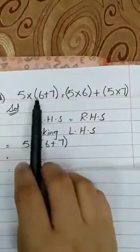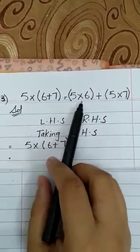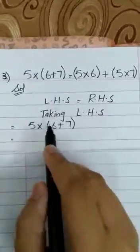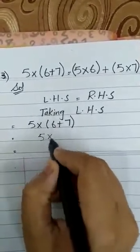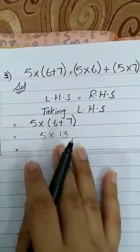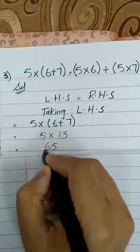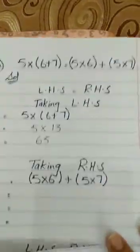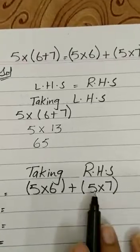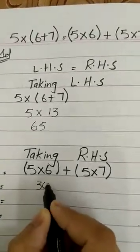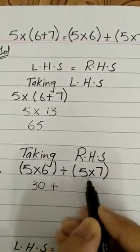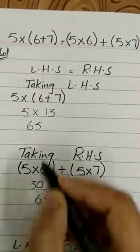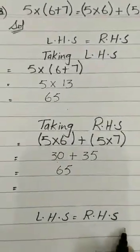Another question: 5 × (6 + 7) = 5 × 6 + 5 × 7. Solution — LHS = RHS. Taking left hand side: 5 × (6 + 7) = 5 × 13 = 65. Taking right hand side: 5 × 6 + 5 × 7 = 30 + 35 = 65. Both sides are equal, so LHS = RHS.